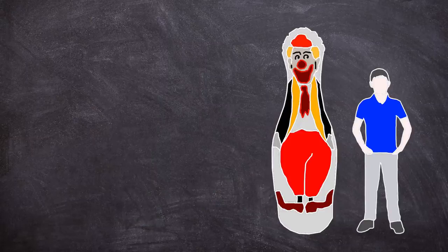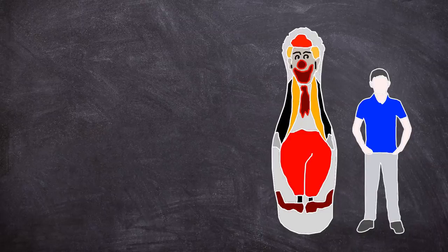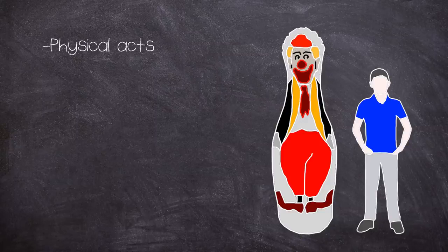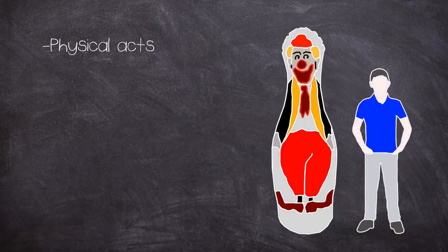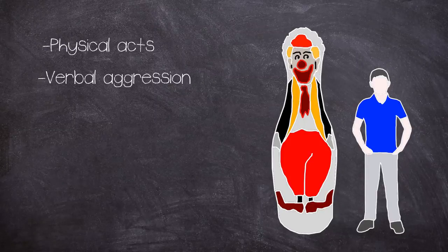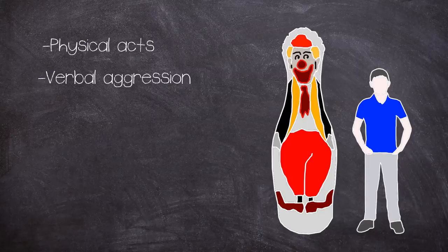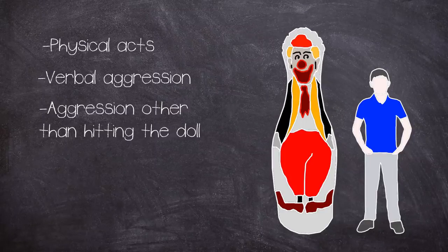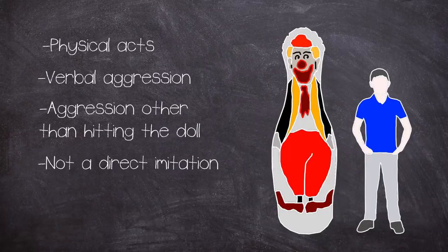In the first room with the Bobo doll the child was allowed to play for 20 minutes while an experimenter evaluated the child's play. The experimenter would record each time the child would initiate aggression in 4 ways. The first measure was based on physical acts such as punching, kicking, sitting on the Bobo doll, hitting it with a mallet or tossing it around the room. The second measure was any verbal aggression towards the doll especially if it mimicked the model. The third measure was the number of times the mallet was used to display forms of aggression other than hitting the doll. And the fourth measure was each time aggression was shown that was not a direct imitation of the role models behaviour.